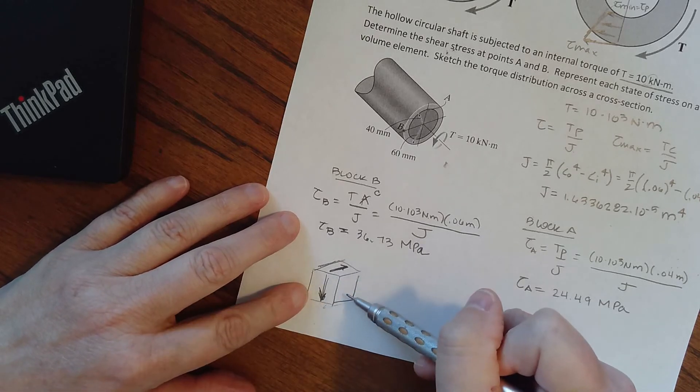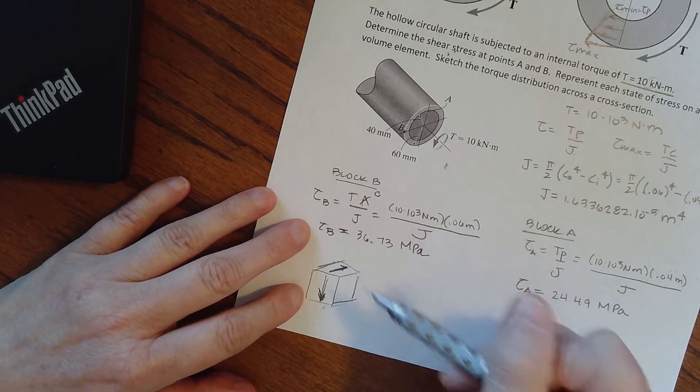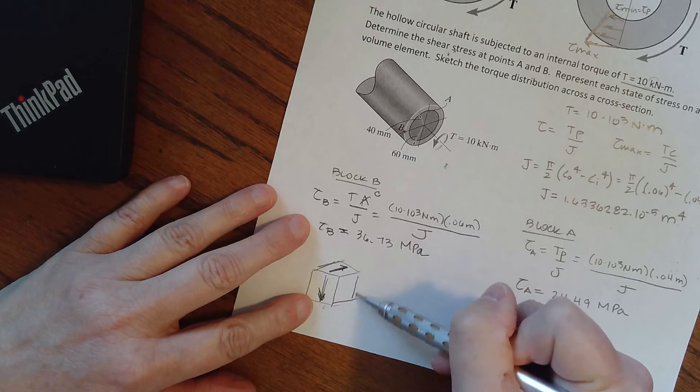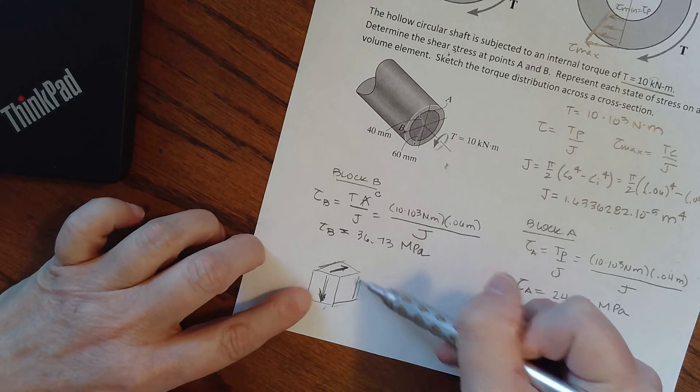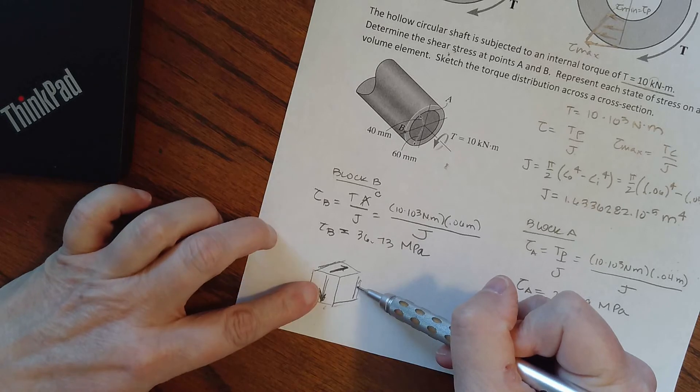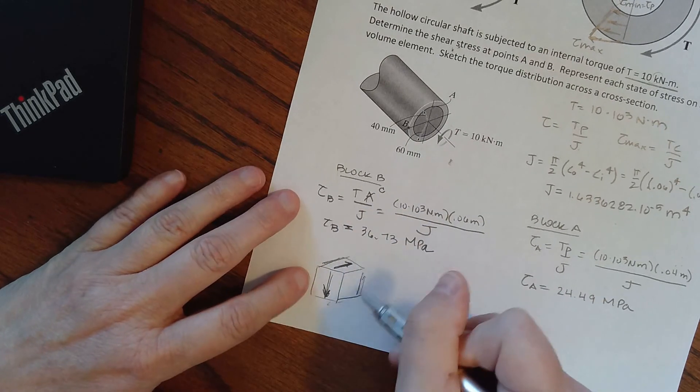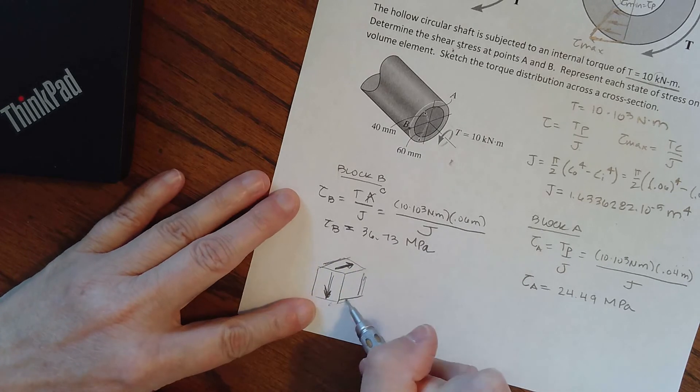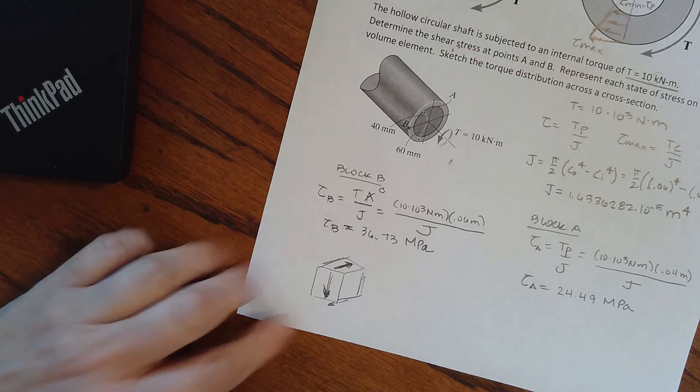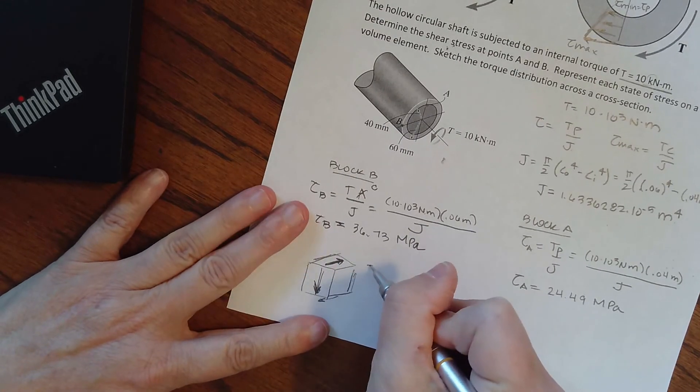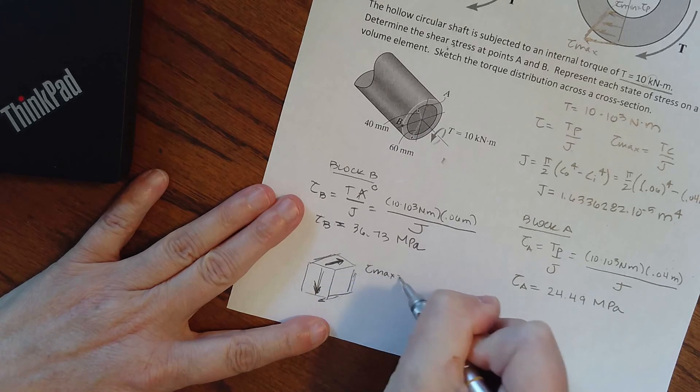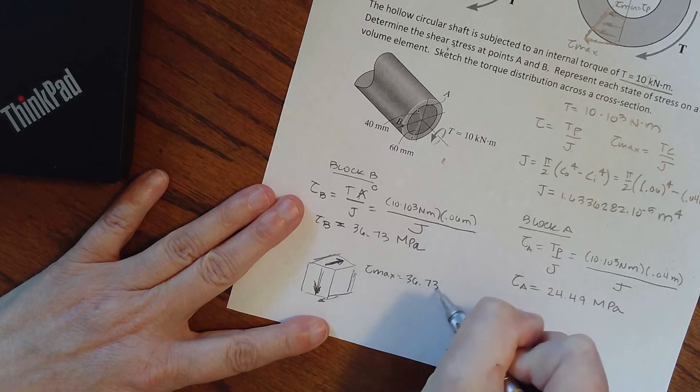So that means on the bottom it has to be meeting it. It's going to be going on the top like that, and then on the back it's coming up. Because if I just have it going down, then the box is not in equilibrium. I have to have it pushing up in the back so that we're equal and opposite. I have to put the stress top and bottom to keep it in equilibrium. This is going to be a maximum of 36.73 mega pascals.